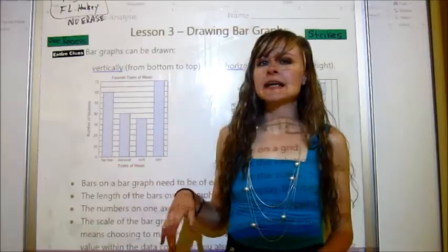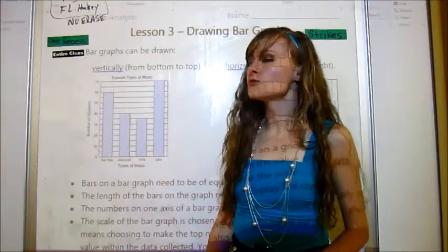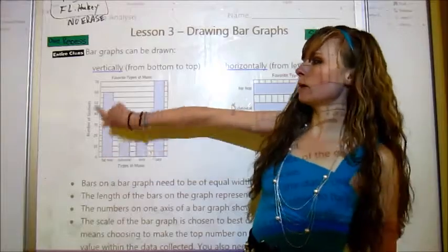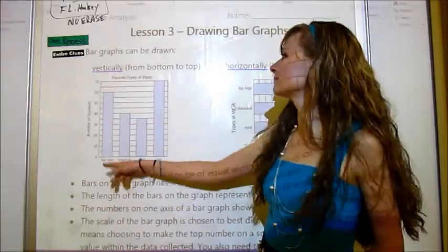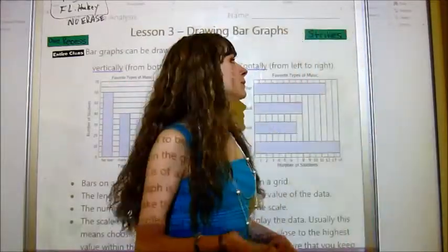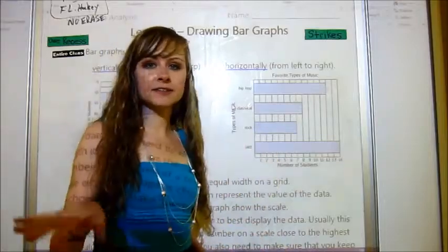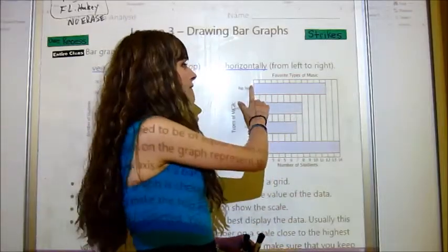First thing that you need to know is that a bar graph can be drawn vertically. So it goes from bottom to top. Or it could be drawn horizontally, that means across, going from left to right.